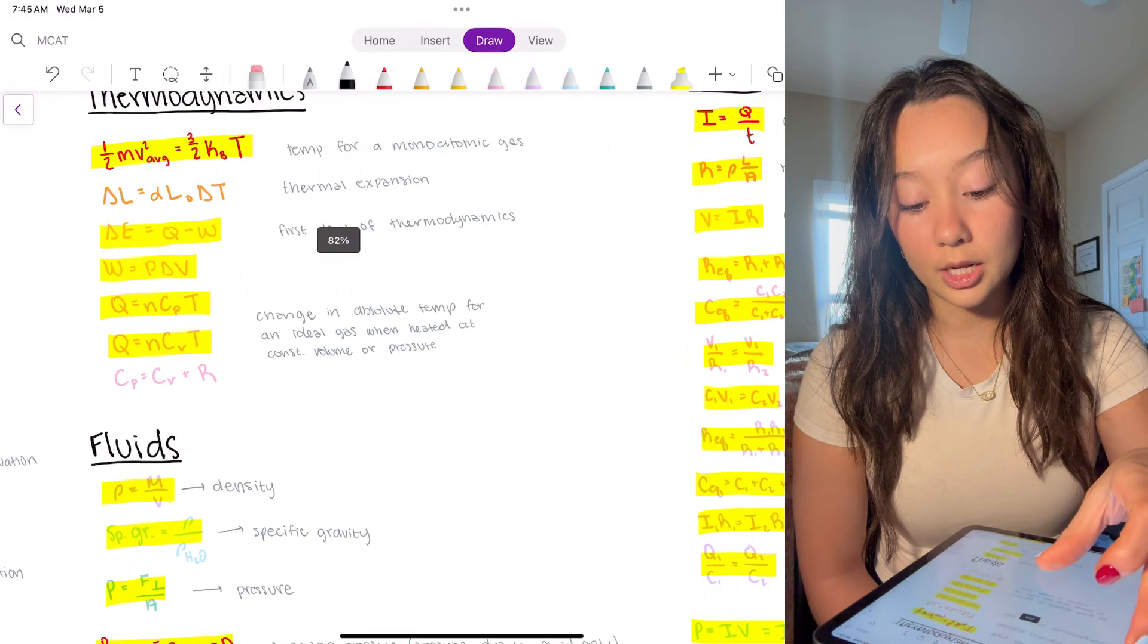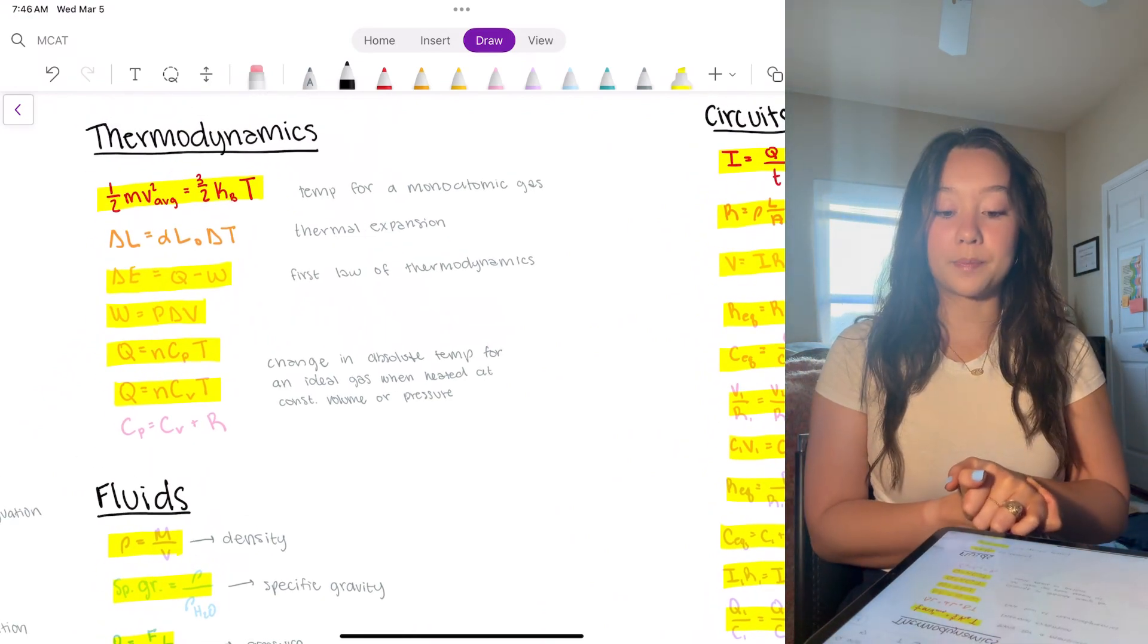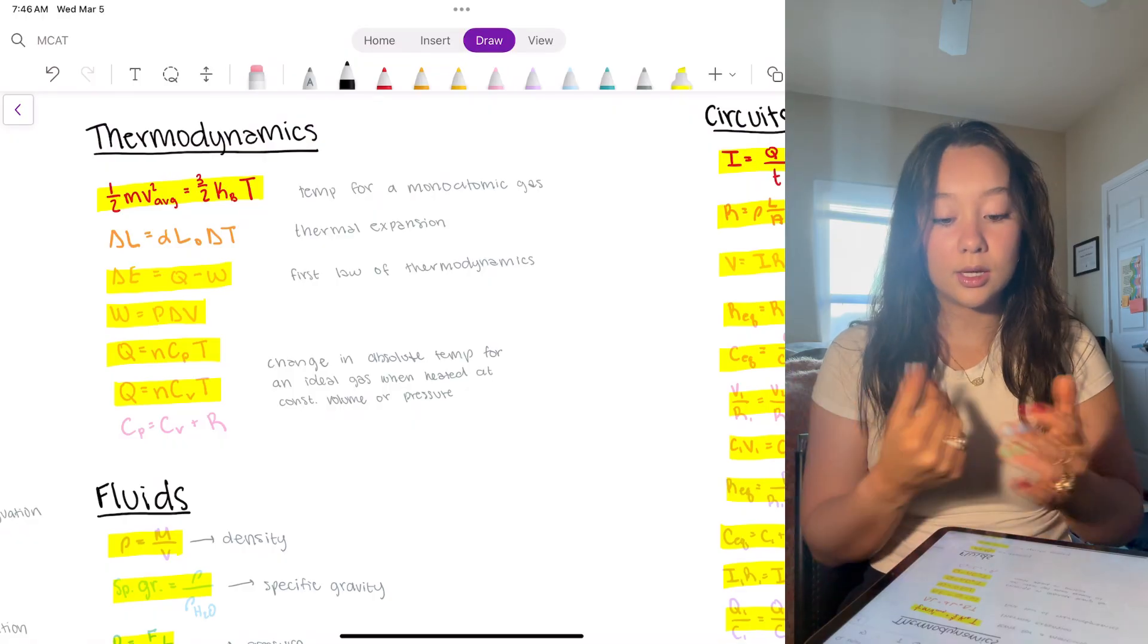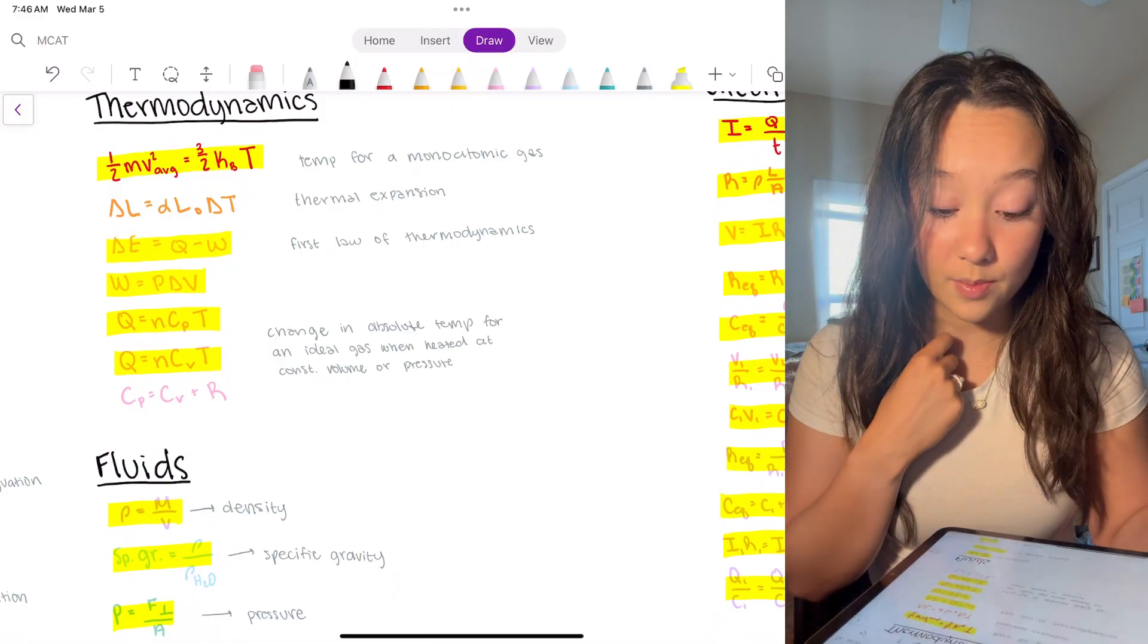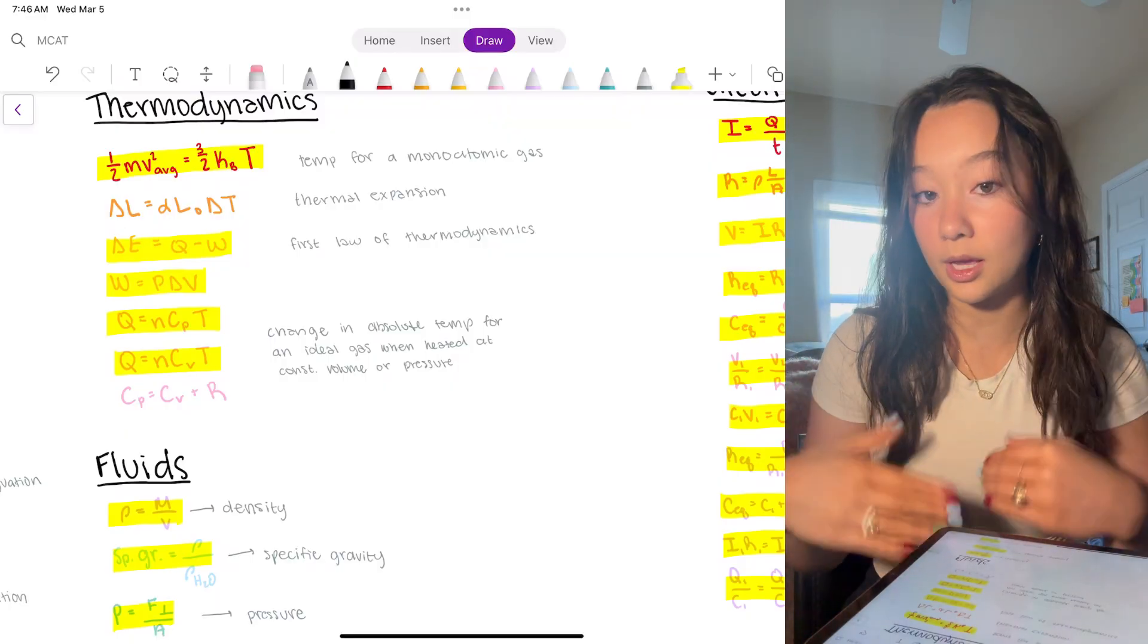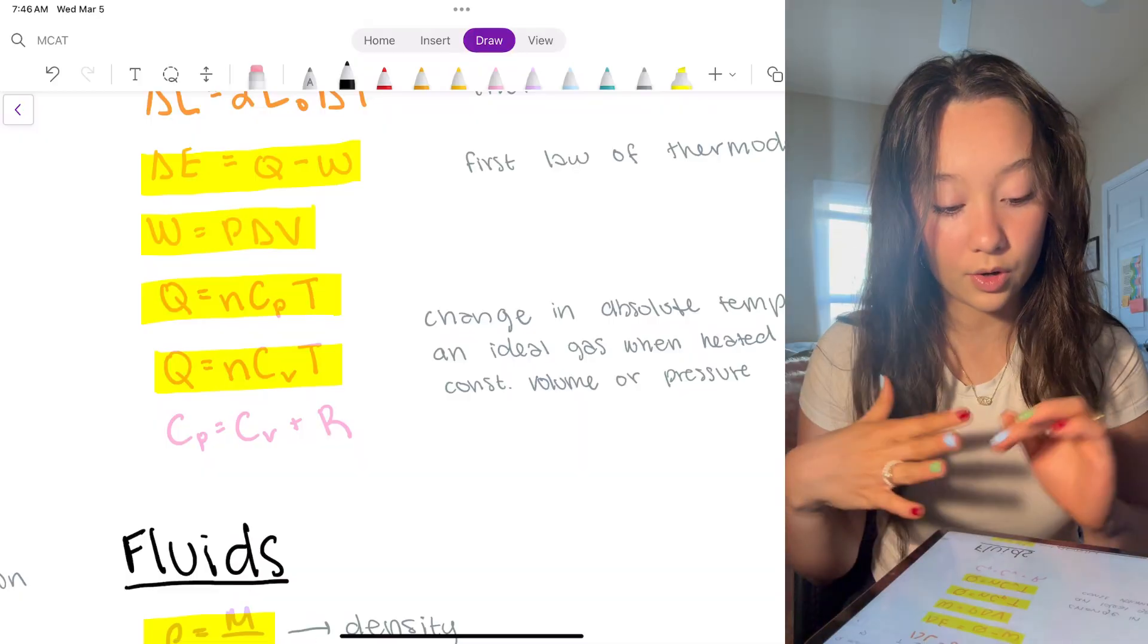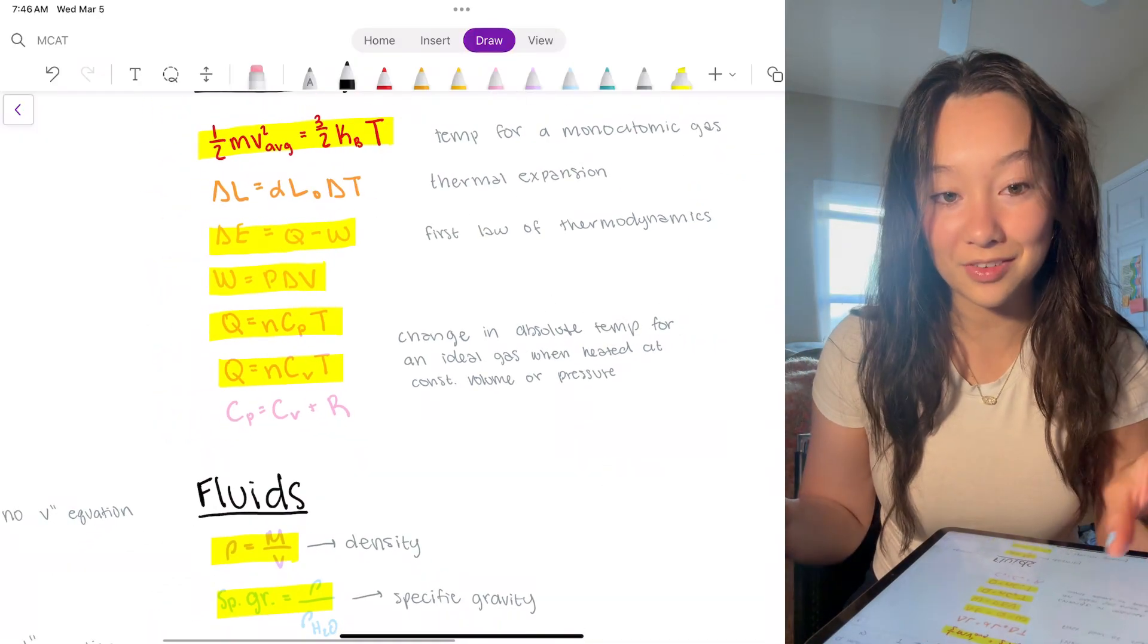So thermodynamics now. This is the temperature for a monoatomic gas. This is basically saying kinetic energy is 3 over 2 kVt. Thermal expansion, first law of thermodynamics, pressure volume work, relationship work is pressure times change in volume. That's for gases instead of for mechanics as we did earlier. I don't think these down here, these heat ones are very high yield, but good to know if you have a really physics-heavy section.